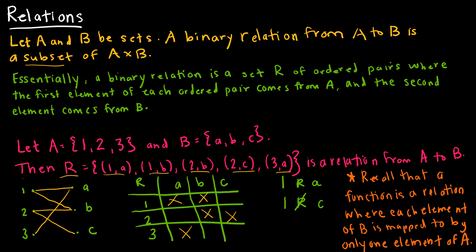And then we have 1Ra so that's saying 1 is in the relation with a, but 1 is not in the relation with c. So the relation does not map 1 to c. And then recall that if we're dealing with a function, a function is just a special type of relation where every element in B, the second set, is mapped to by only one element of A. It's just a reminder that a relation is just a little bit more general because it doesn't have that extra restriction.